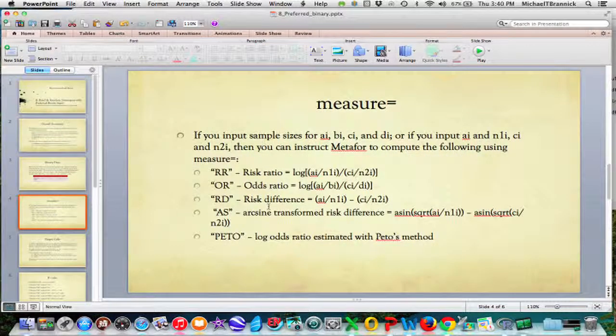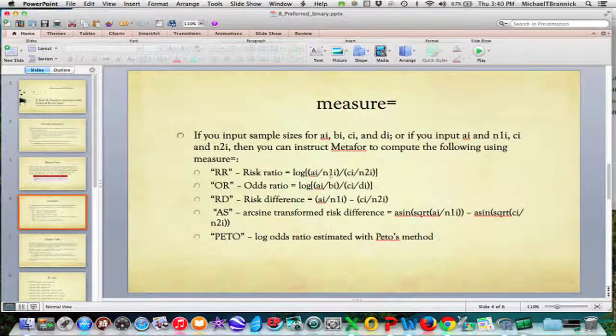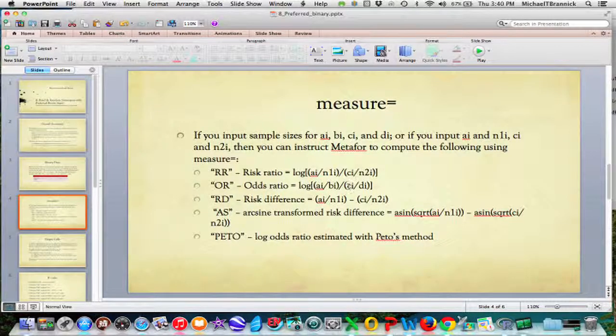Let's say you put in A, B, C, D like that. Then you can instruct Metaphor to compute the following using measure equals whatever. Measure could equal RR for risk ratio, which is the proportion of people who got the event in the treatment group compared to the proportion in the control group. The odds ratio is A to B compared to C to D—events to non-events, comparing those two. Risk difference is the proportions compared. Arcsine is a transformation of the risk difference, and Peto is a transformation of the log odds. Those are the choices you have.